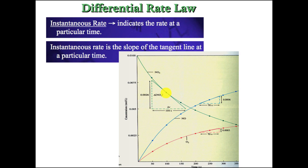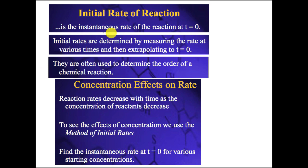To find the instantaneous rate, we take the slope of a tangent line to that particular point. This should sound familiar if you're in calculus — it would be your derivative. We're not going to actually calculate derivatives, but it gives us the rate at that particular point in time. They calculate rates at various times and then extrapolate back to the zero point.